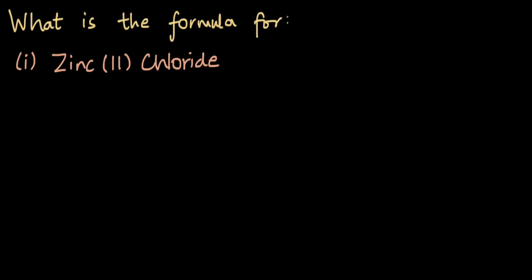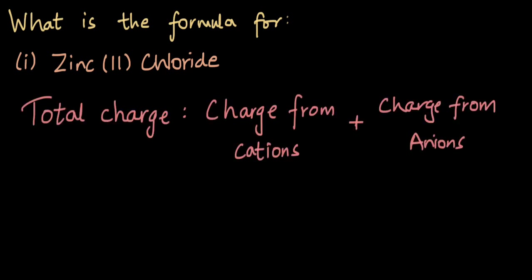In this video, let's learn how to write the formula for ionic compounds. For the first one, we have to think about the formula of zinc chloride. The main idea of writing the formula of an ionic compound is that the total charge on the final ionic compound has to be zero. Total charge is the charge that comes from cations plus the charge from anions.